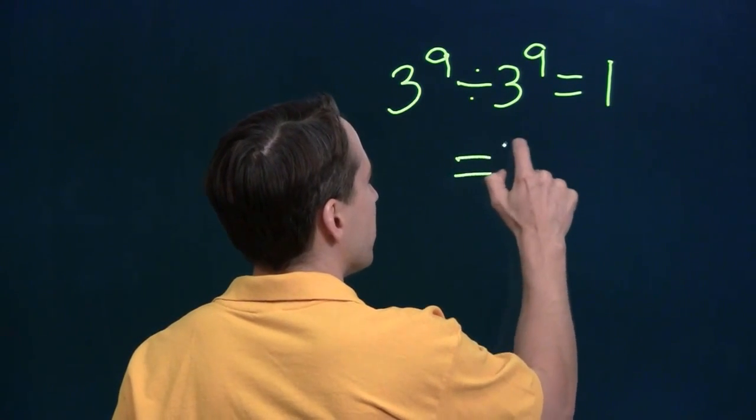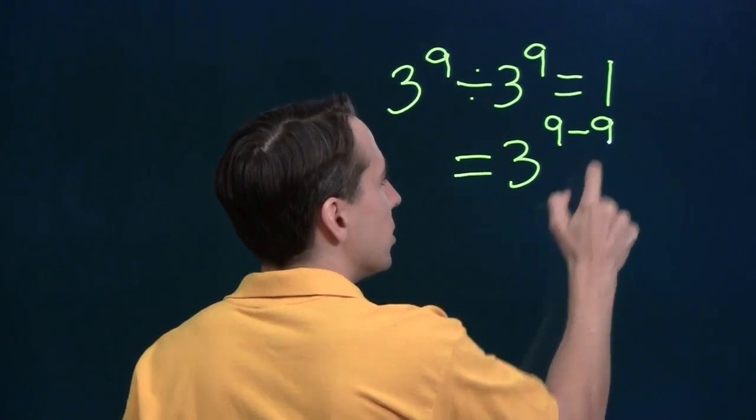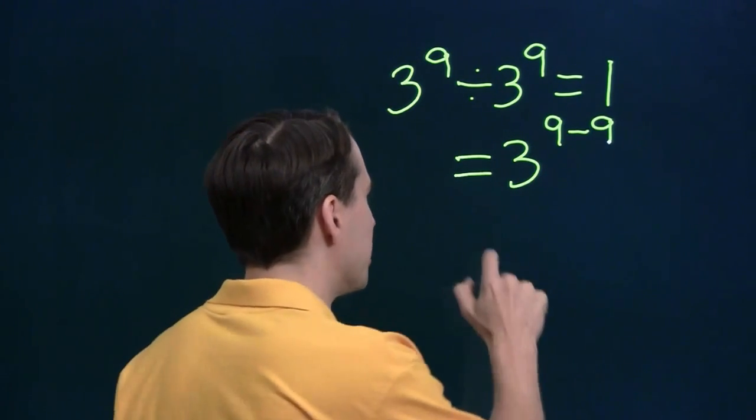Now remember that rule tells us that we take the difference of the exponents, so it gives us 9 minus 9, and of course 9 minus 9 is just 0.